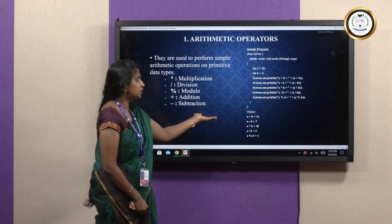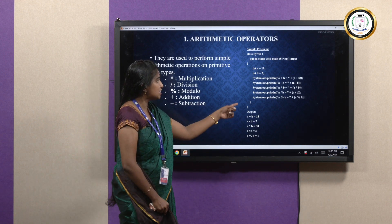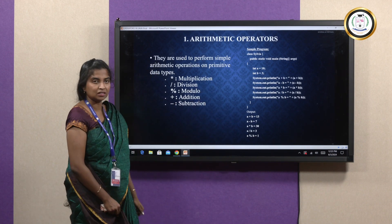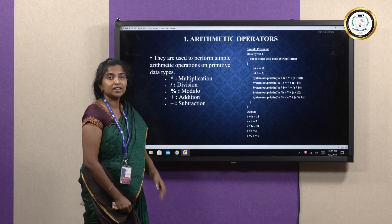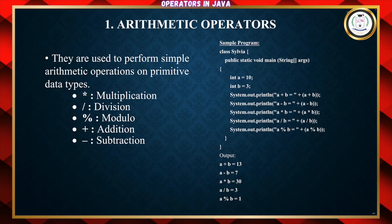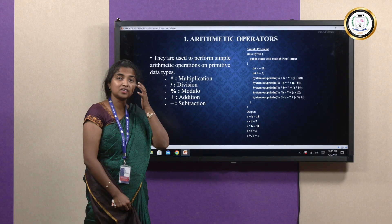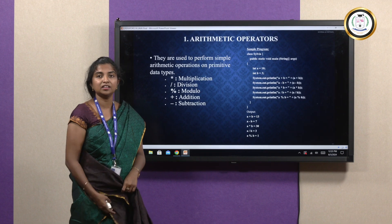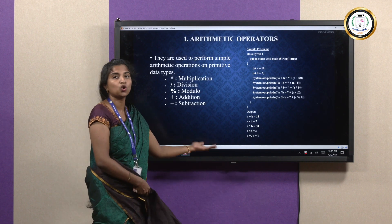Looking into the output that is generated: a plus b is 10 plus 3, that is 13. Subtraction is 10 minus 3, that is 7. Multiplication is 30. Division is 3. And the modulo is 1. The modulo returns the remainder, while division returns the quotient.